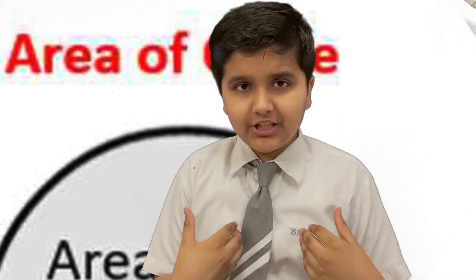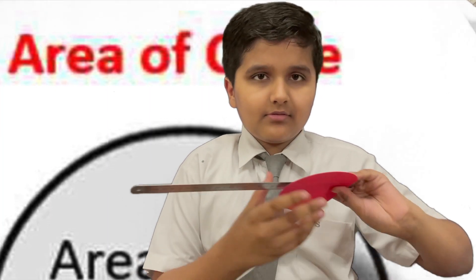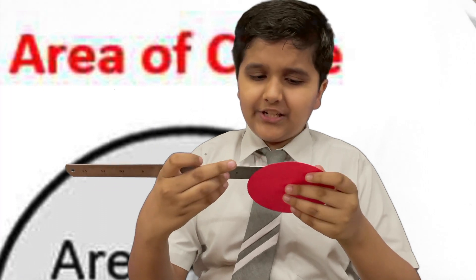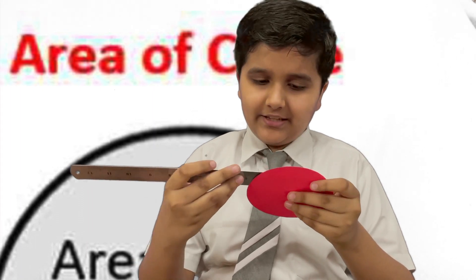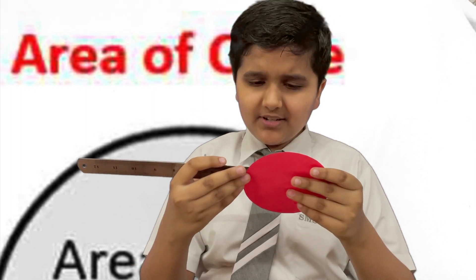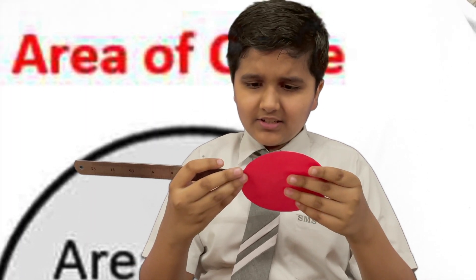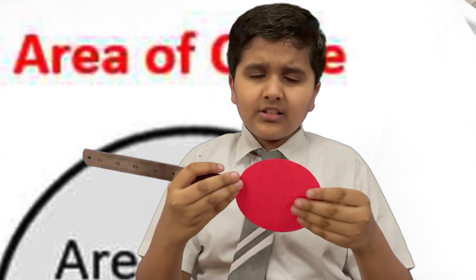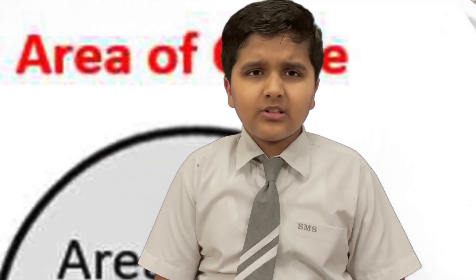Can we convince ourselves that the area of a circle must be pi times r square? Let's measure it with a scale. 4 cm, 6 cm, 10 cm. The measurement is changing at different points. I don't think we can measure it using a scale.